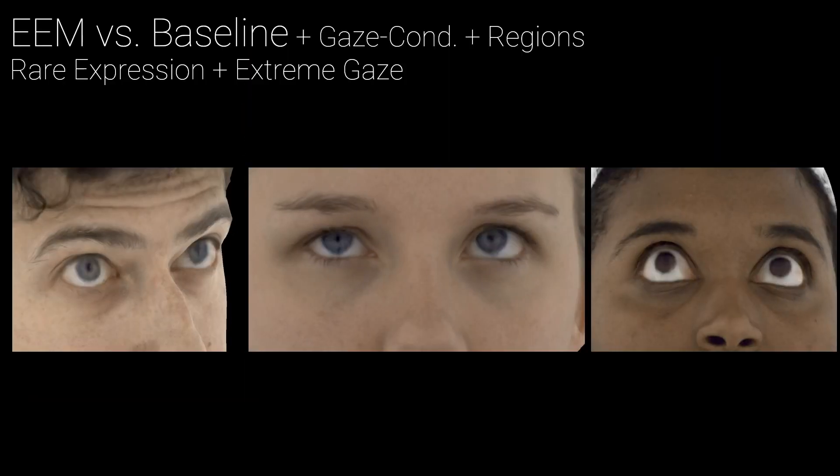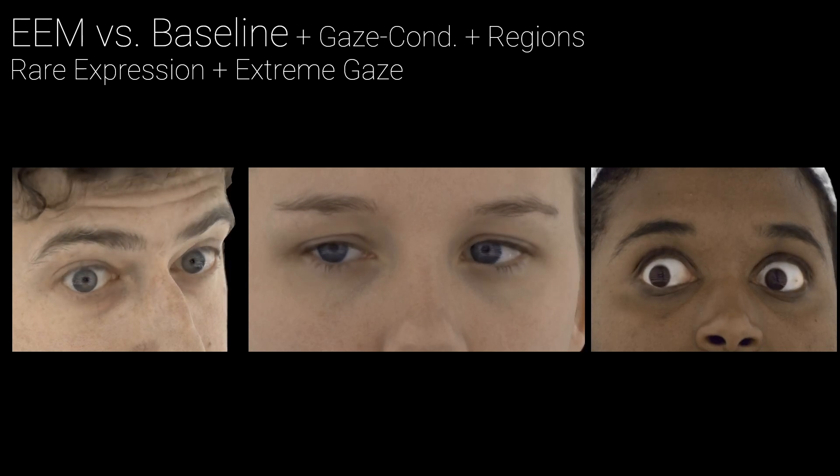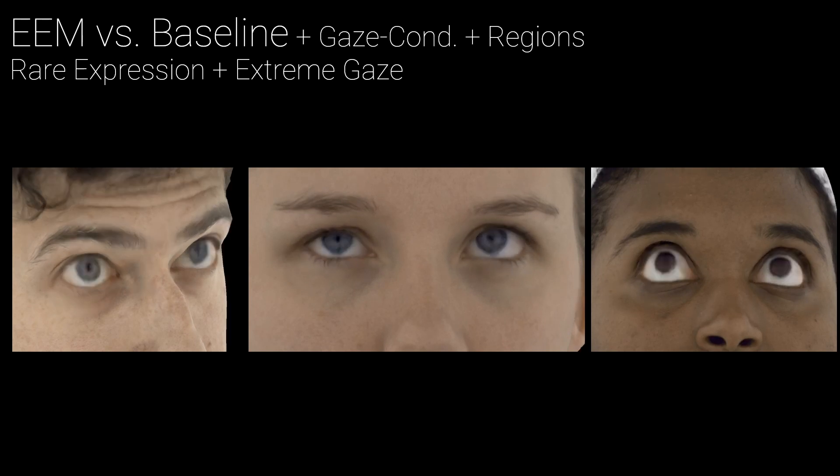To highlight the improvement in gaze precision and appearance quality produced by our model, we show comparisons between it and a deep appearance model with gaze control. While the baseline does attempt to draw the eyes in roughly the right place, their quality is very poor and the orientation is clearly off. With our explicit eyeball model, we know exactly where the eyes are pointing at all times.